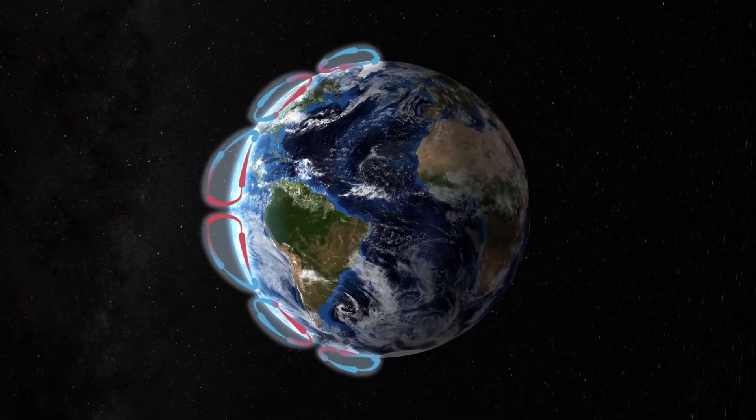This would be how our atmosphere works if our Earth didn't rotate. When we add rotation, the large overturning circulation breaks up into cells, or three smaller circulations in each hemisphere.